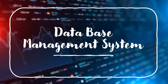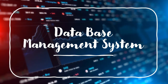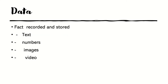We are moving to our topic: database management system. First, we explain the term data. Data is a fact that can be recorded and stored. Data can be of different types — it can be in text format, numerical format (that is, numbers), can be an image, or it can be a video. These are some examples of data.